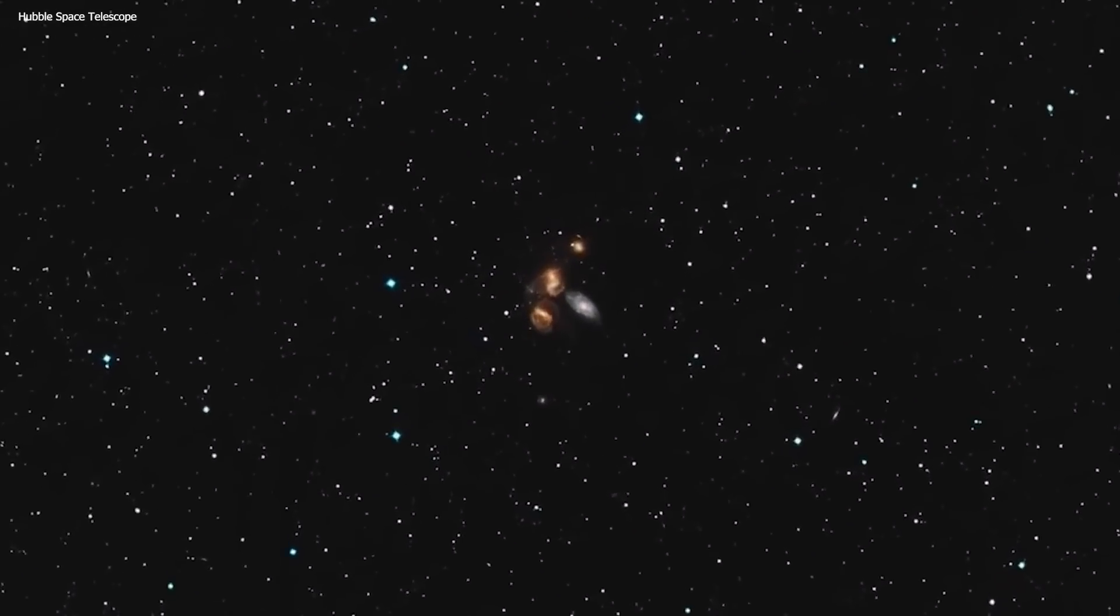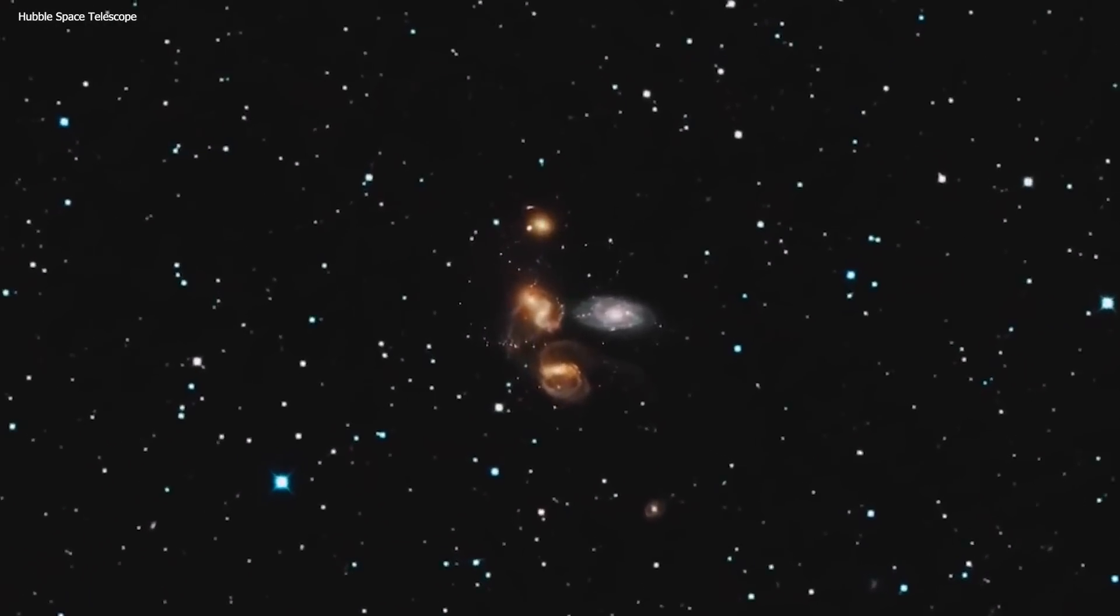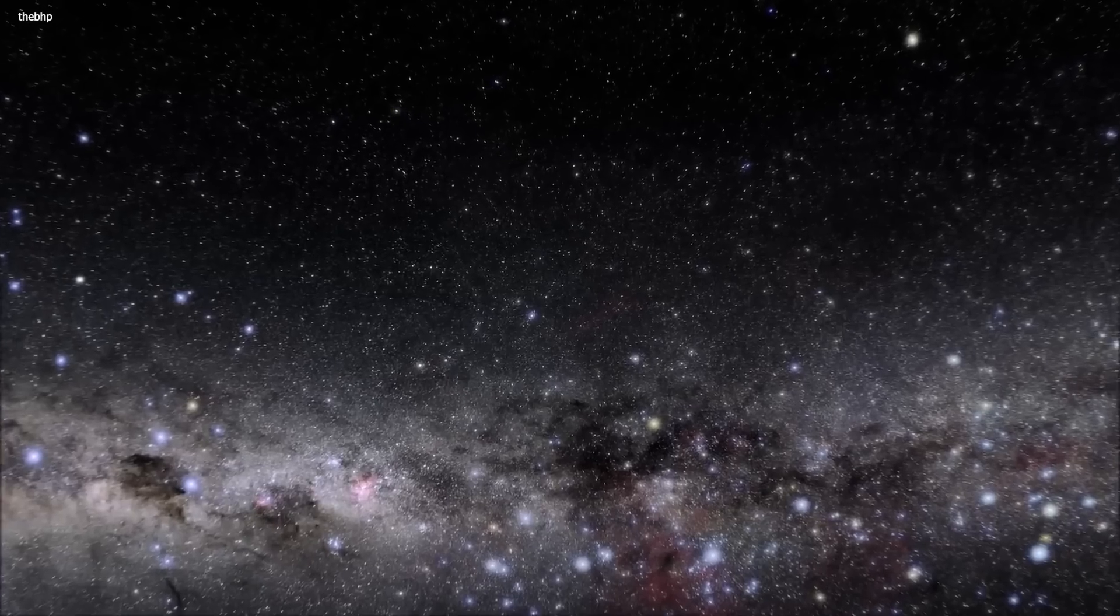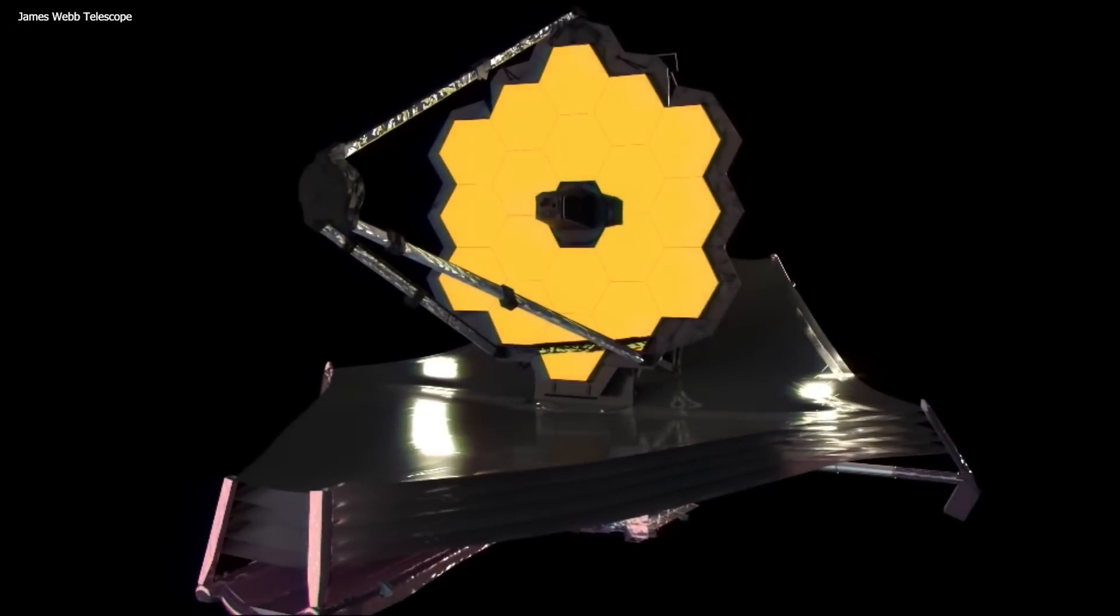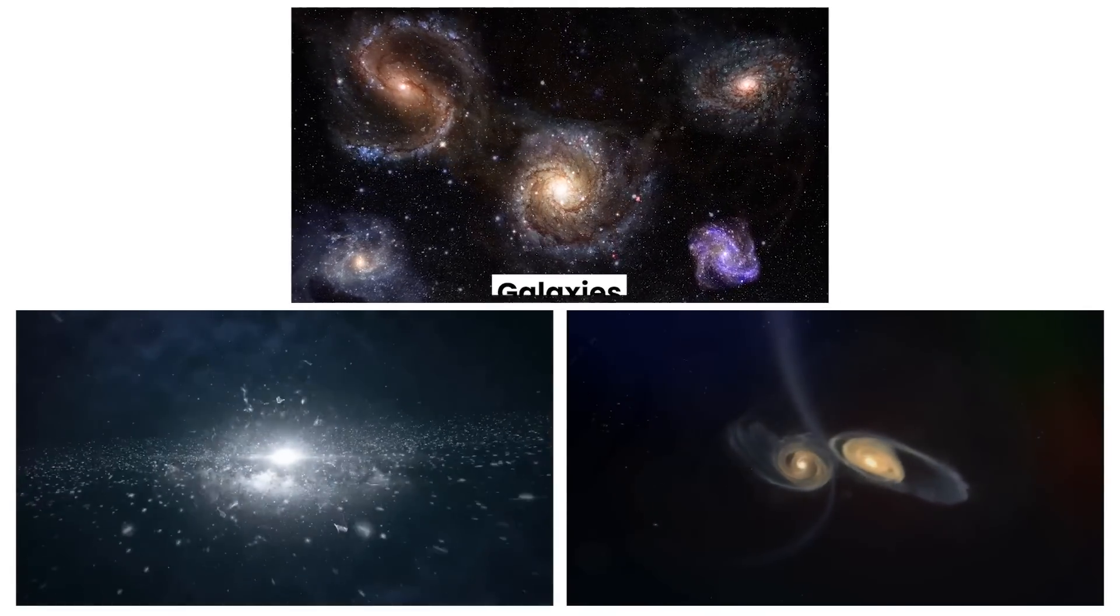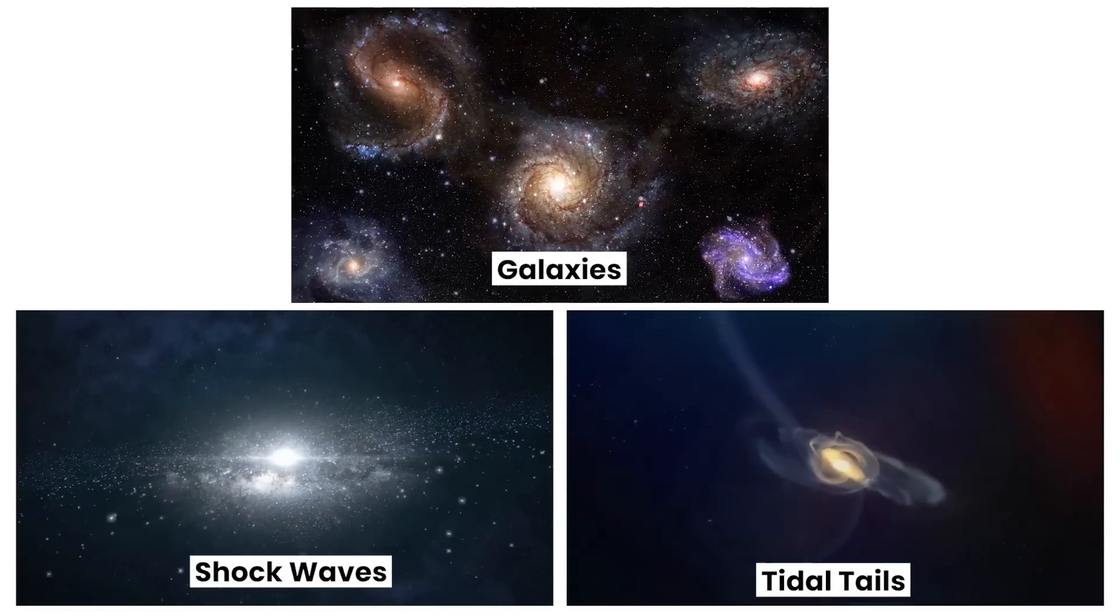But let's move on to Steffen's Quintet. Steffen's Quintet is a group of five galaxies located around 290 million light-years away in the constellation Pegasus. Thanks to NASA's JWST, we've been able to observe some incredible details about these galaxies, such as shock waves and tidal tails.